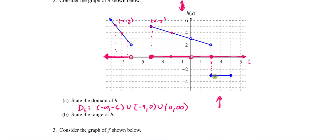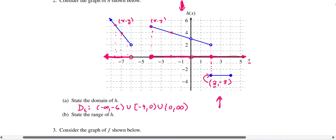The most confusing part of this graph is right here. It is true that the open dot is not a point on the graph of the function. However, there is an ordered pair whose domain value is two — that's the ordered pair two comma negative three — which is on the graph of this function. That means two needs to be in the domain. So even though the open dot does not correspond to a point, there is a point on the graph that has an x-coordinate of two, so we did include two.